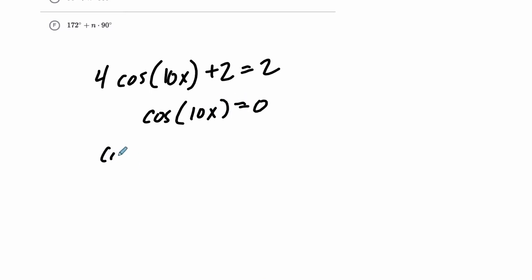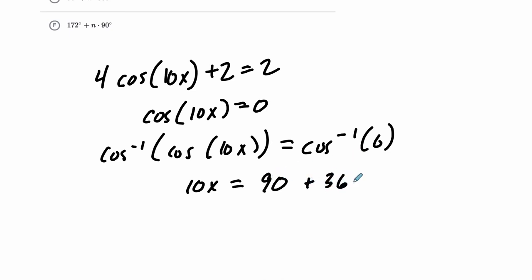Now I take the inverse cosine of both sides. So the inverse cosine of the cosine of 10x equals the inverse cosine of 0. These inverse functions cancel out, and you have 10x equals, well, at what degrees does the cosine equal 0?